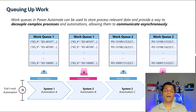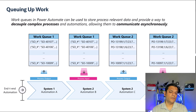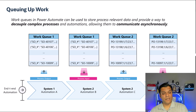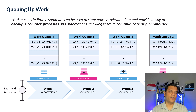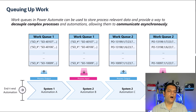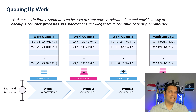Hey everyone, my name is Daniel and in today's video we're going to take a look at how you can queue up work in Power Automate for desktop. This process is very important especially if you want to decouple complex processes such that each of these queues can run asynchronously — they don't have to run at the same time — saving you complications such as workflows running out of time.